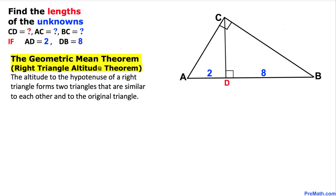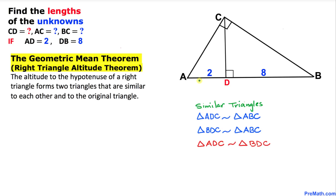Before we proceed, let's talk about the geometric mean theorem, or sometimes we call it the right triangle altitude theorem. It states that the altitude to the hypotenuse of a right triangle forms two triangles that are similar to each other and similar to the original triangle as well. CD is an altitude that makes a 90-degree angle to the hypotenuse AB, and as a result we get two triangles: on the left-hand side ADC and on the right-hand side triangle BDC.